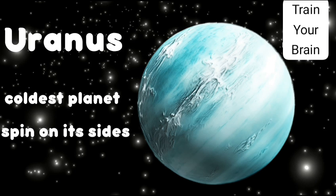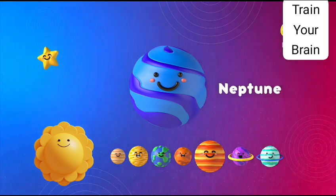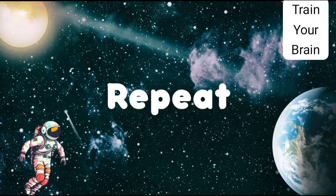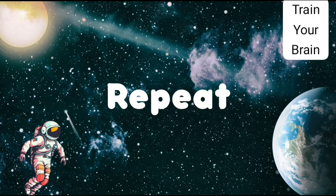Neptune is the farthest planet from the sun. It is an ice giant that has the strongest winds of any planet in the solar system. The presence of methane gives Neptune its bluish color.